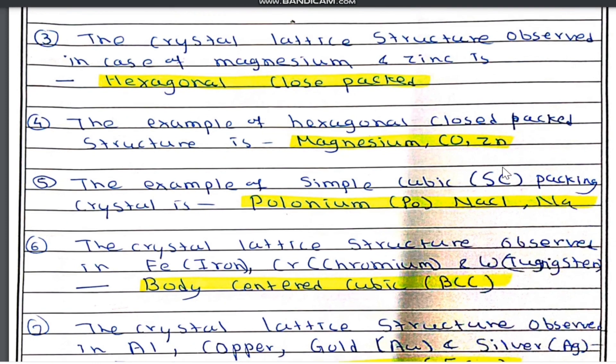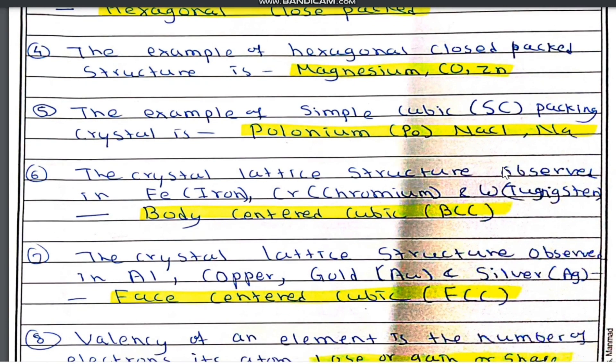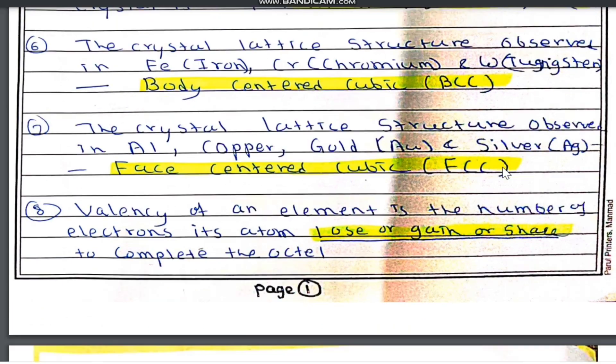The fifth question: examples of simple cubic (SC) packing crystal are polonium and sodium metal. The crystal lattice structure observed in iron, chromium, and tungsten is body-centered cubic, also known as BCC. The crystal lattice structure observed in aluminum, copper, gold, and silver is face-centered cubic, that is FCC.